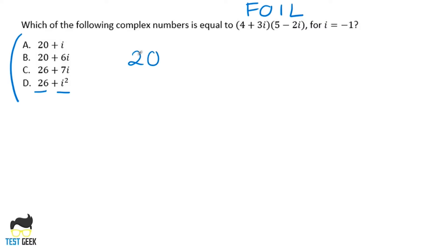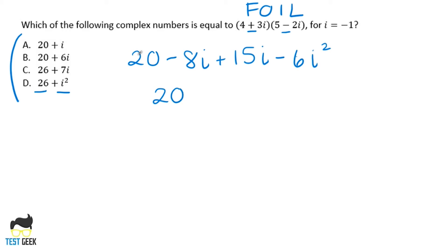So FOILing out (4 + 3i)(5 − 2i): first is four times five, which is 20. Outer is four times negative two i, which is negative eight i. Inner is three i times five, which is 15i. And then three i times negative two i gives us minus six i squared. Now we can combine like terms — negative eight i and 15i give us seven i. So we have 20 plus seven i minus six i squared.